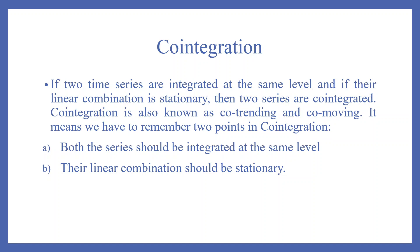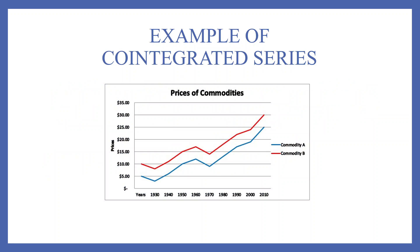If two time series are integrated at the same level and if their linear combination is stationary, then the two series are co-integrated. Co-integration is also known as co-trending and co-moving. We have to remember two points: first, both series should be integrated at the same level; second, their linear combination should be stationary. In this plot, you can see that the prices of commodity A and commodity B are moving together — this is an example of co-integrated series.